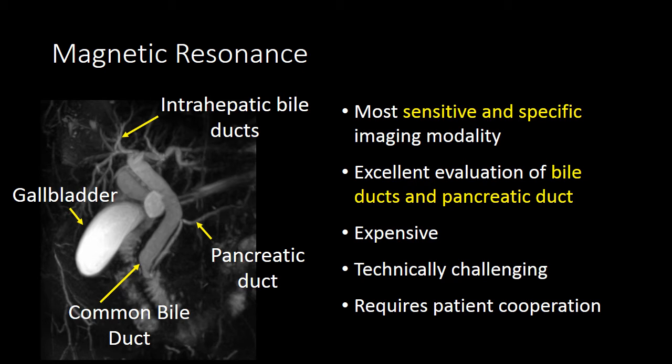MRI does have some drawbacks — it's very expensive, it can be technically challenging to perform and interpret, and it requires patient cooperation. Your patient must be able to sit in a long, thin tube for up to an hour, and they also have to hold their breath for up to 20 seconds to get good, high-quality images that are not blurred due to motion artifact.